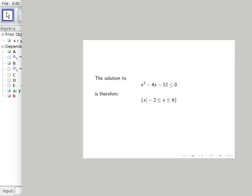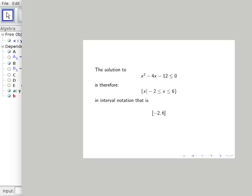The solution to x² - 4x - 12 ≤ 0, we have seen from some graphical and combination of algebra techniques, is therefore the set of all x so that -2 ≤ x ≤ 6. In interval notation, that is [-2, 6].